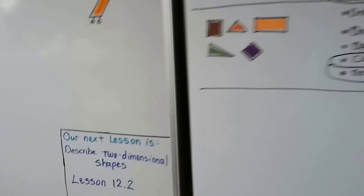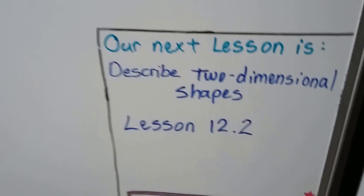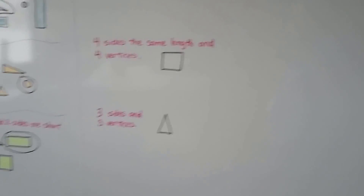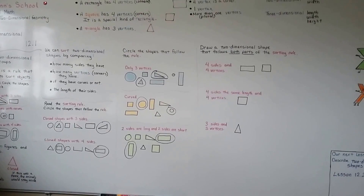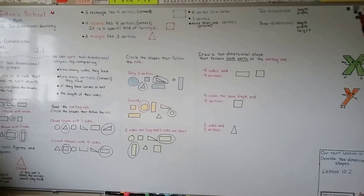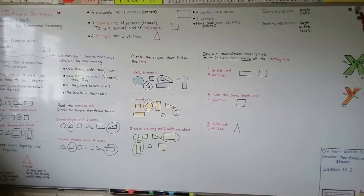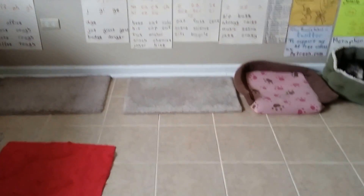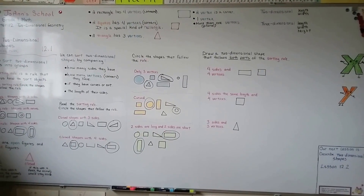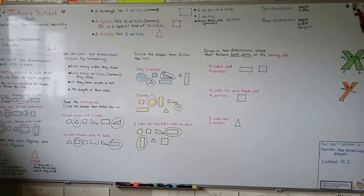In our next lesson, 12.2, we're going to describe two-dimensional shapes. Can you find two-dimensional shapes around your house, or even three-dimensional shapes? Look around your kitchen — are the cabinets rectangles? Are the drawers rectangles? How about the tiles on your floor — are they squares? See how many two-dimensional and three-dimensional shapes you can find around your house. I hope you have a great day, and I'll see you next time. Bye!